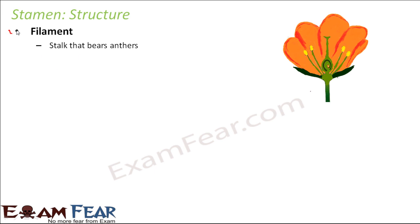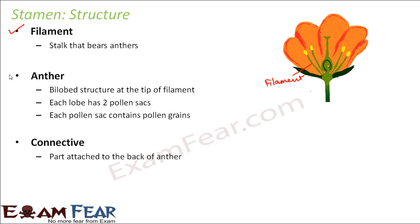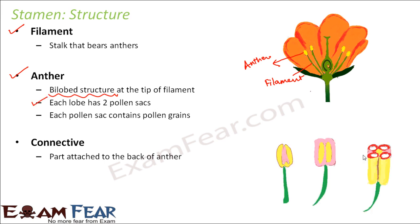The first part of the stamen is the filament, which is a stalk that bears anthers. This tube-like structure bears the anthers. The next part is the anther — the yellow colored structure which you see here. If you look at the structure of the anther in more detail, it is a bi-lobed structure, meaning it has two lobes or two compartments partitioned from each other. Each lobe contains two pollen sacs, giving a total of four pollen sacs.